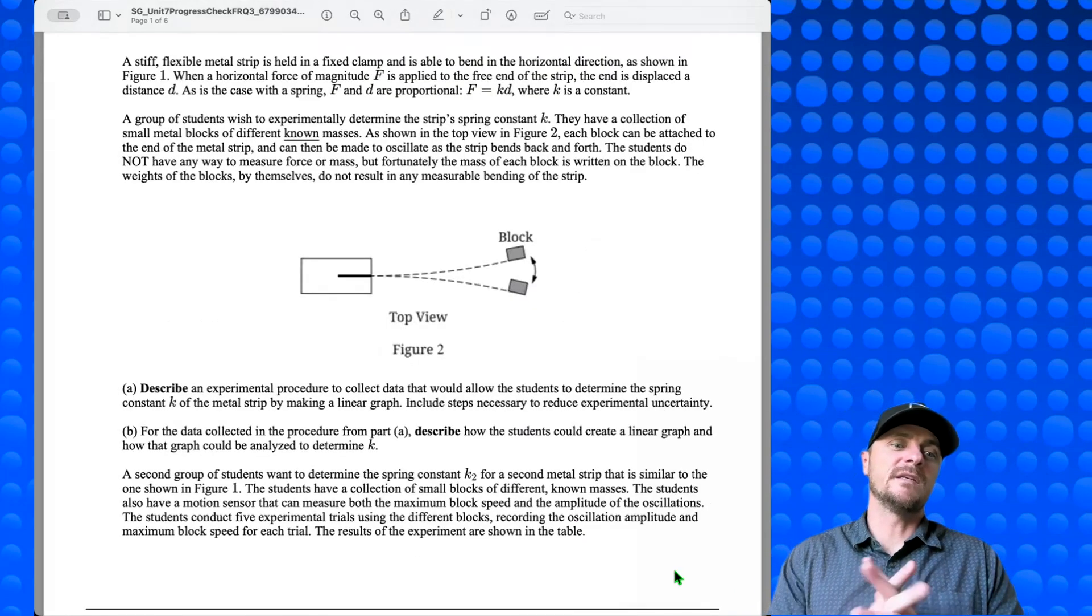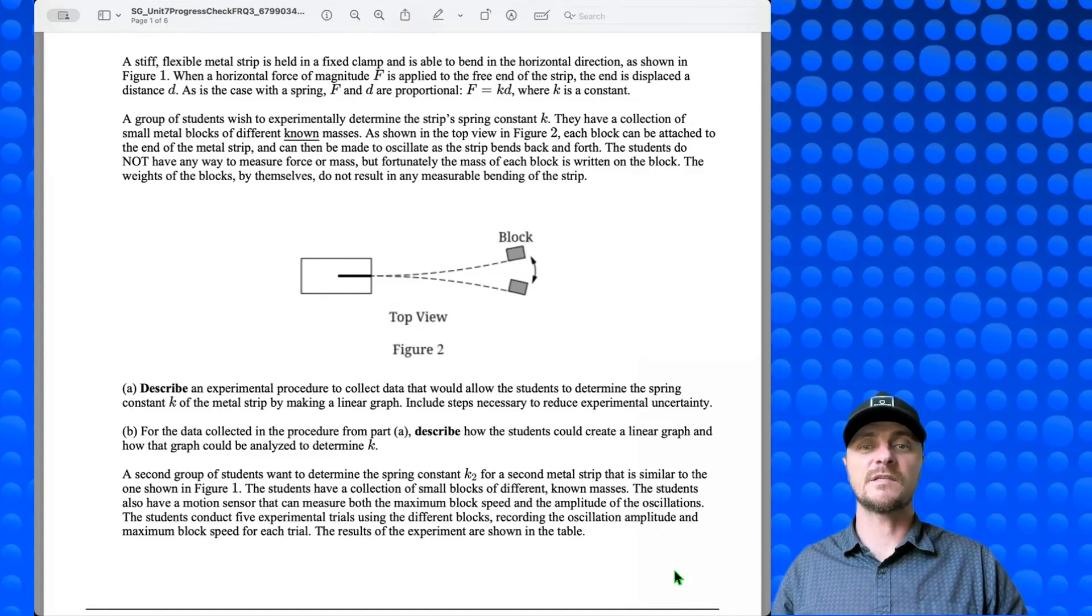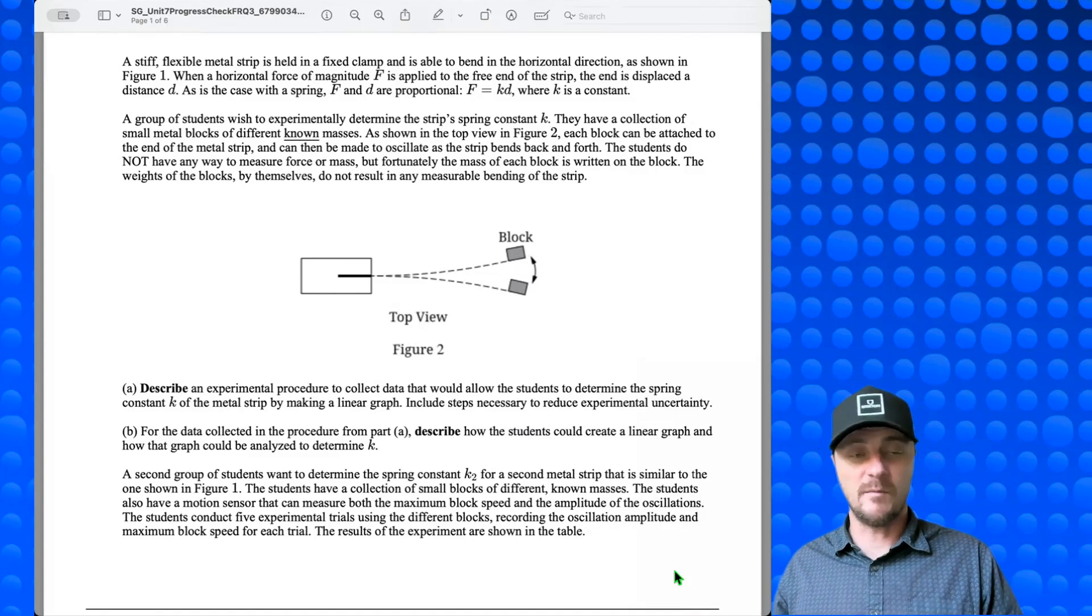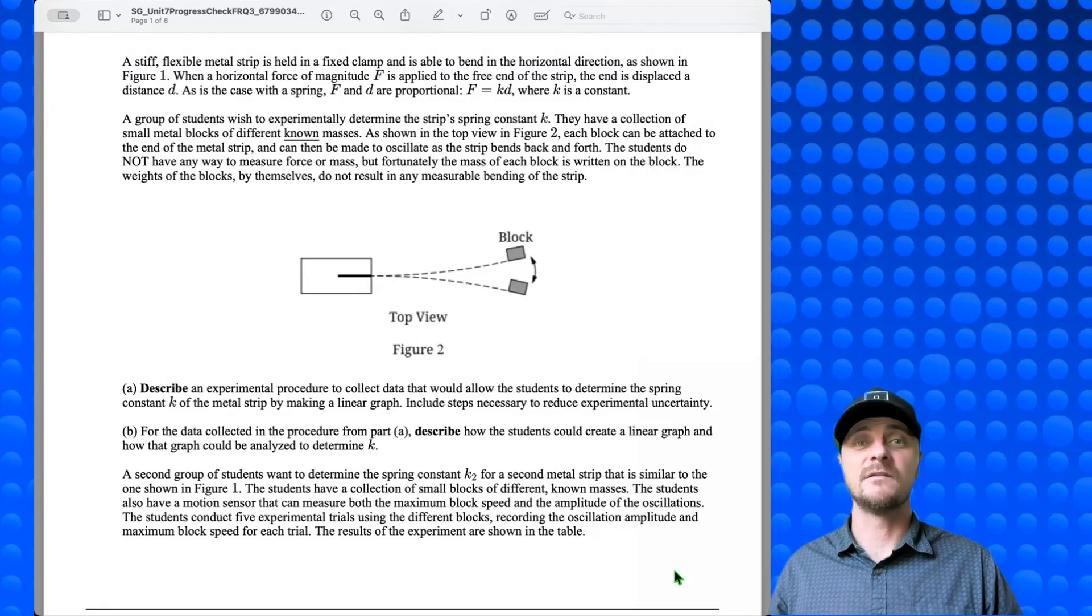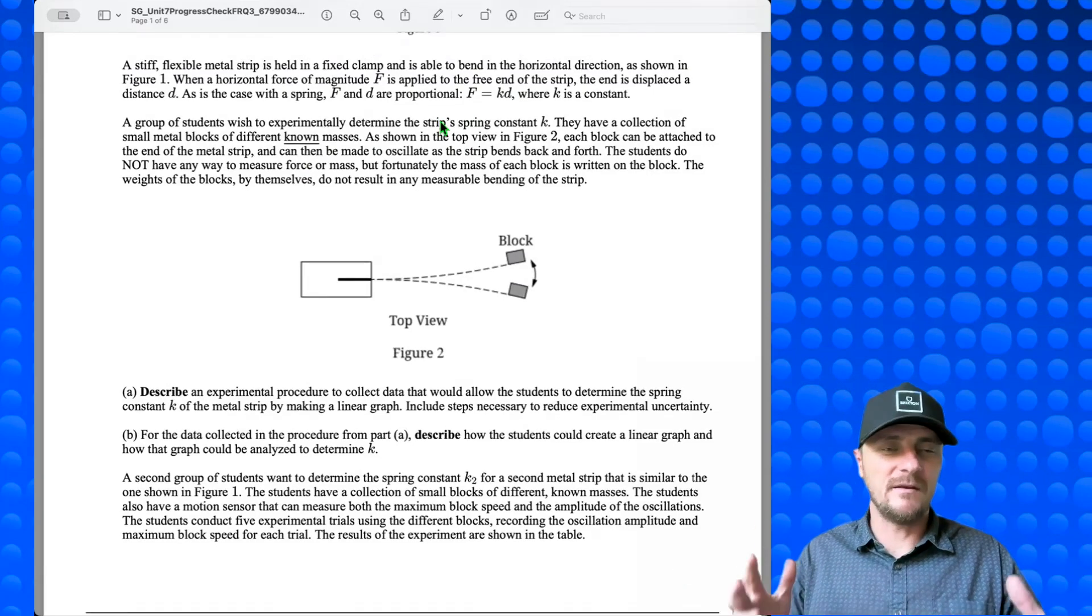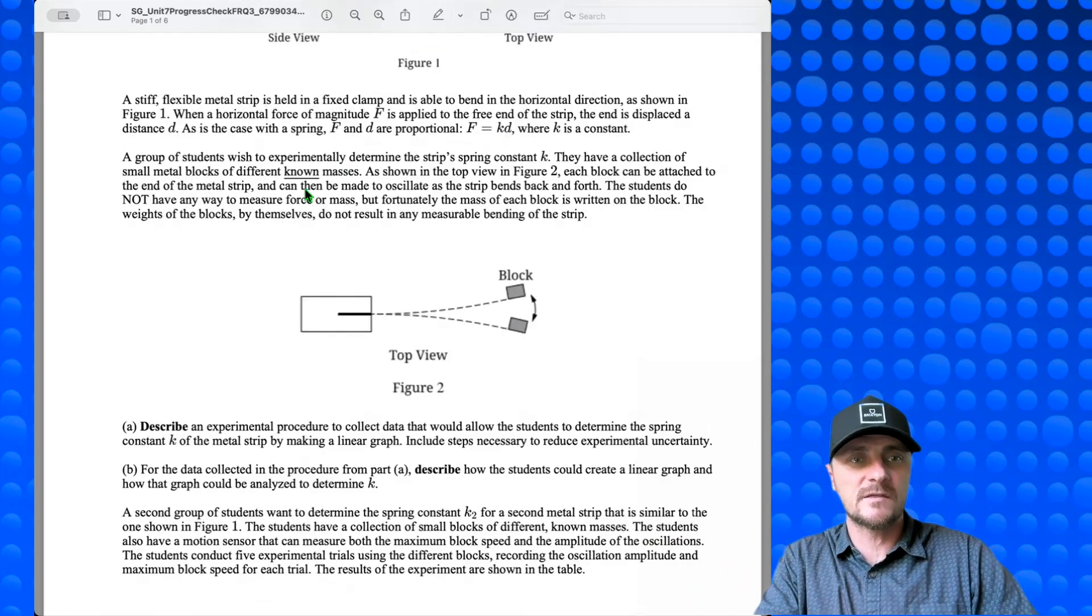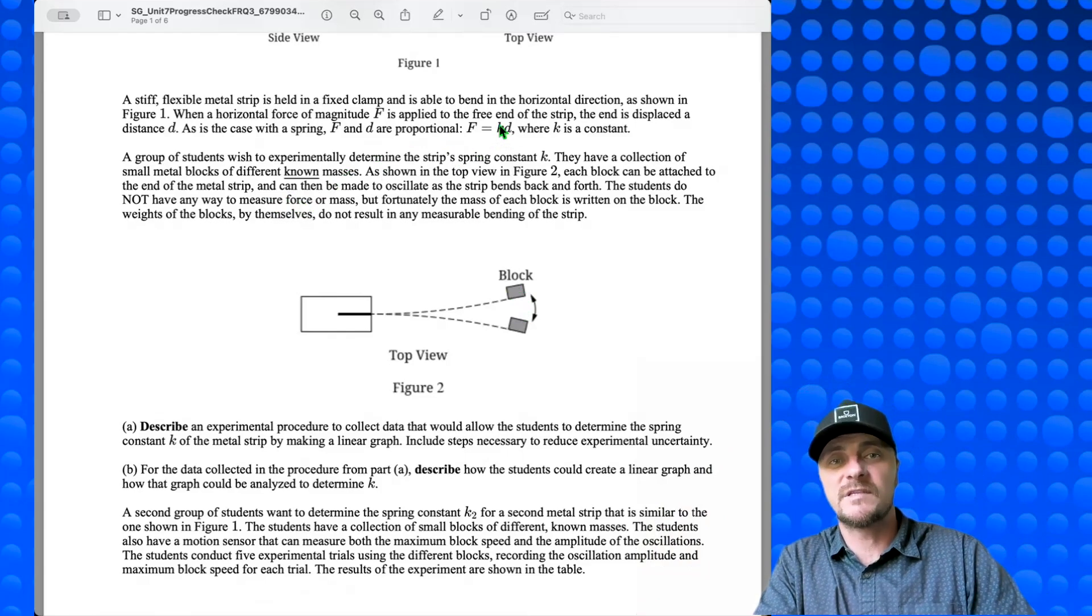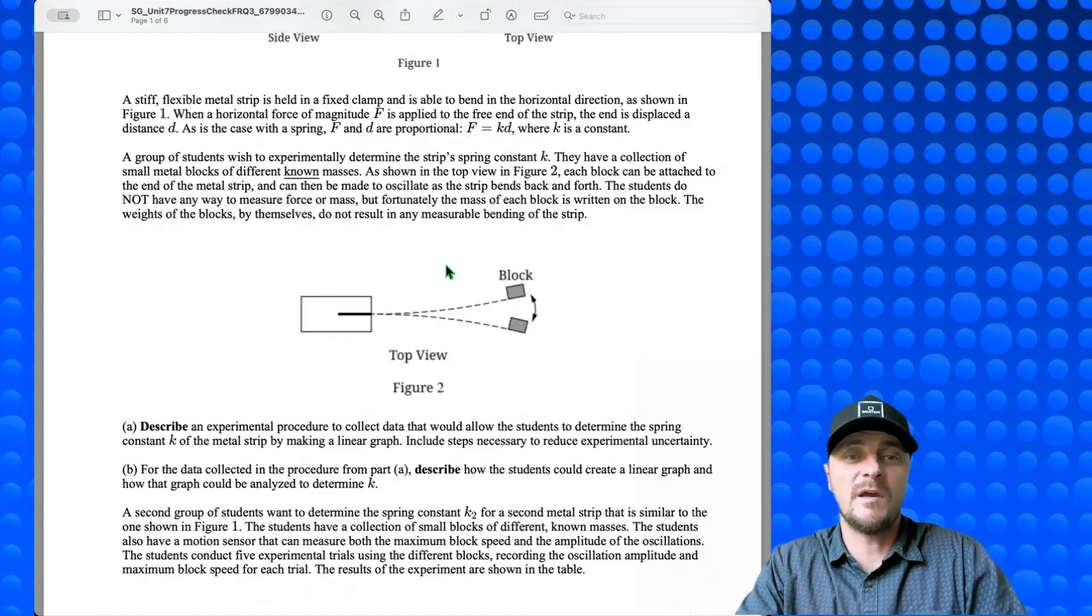So in Part A, we need to describe an experimental procedure to collect data that would allow the students to determine the spring constant k of the metal strip by making a linear graph. And while we're at it, let's talk about B. For the data collected in the procedure from Part A, describe how the students could create a linear graph and how that graph could be analyzed to determine k. Just thinking off the top of my head, I know I can't use Hooke's Law. Hooke's Law is f equals kd, and they just told me that I can't measure the force.